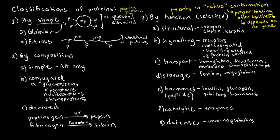By composition, we have simple, conjugated, and derived. You may be asking, what's the point of classifying proteins by composition? Aren't all proteins or peptides composed of amino acids? That is actually only partially correct.